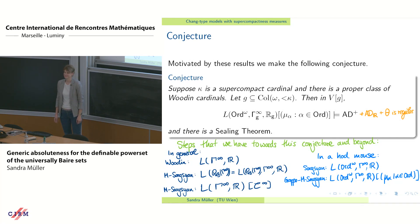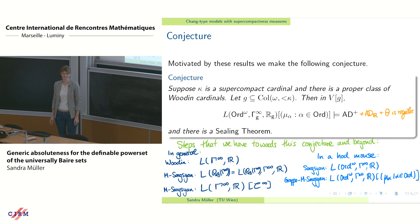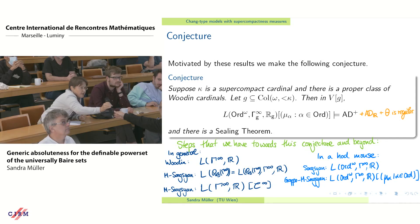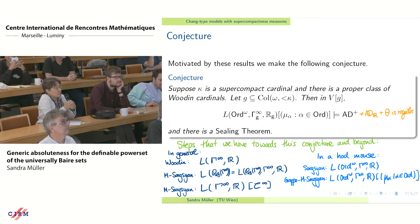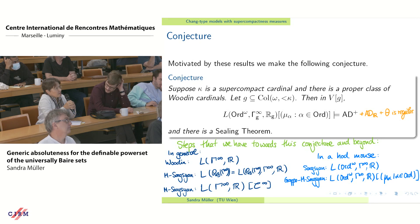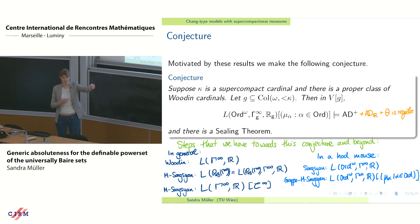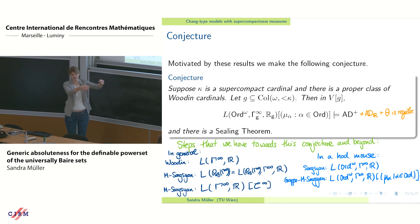Question: About seven slides ago you had HOM* and ℝ* in M[G] — what are they? Answer: For the derived model construction you look at the Lévy collapse of some limit of Woodin cardinals. ℝ* are the reals that appear in segments of the collapse, and HOM* are the things that are homogeneously Suslin in some segment of the collapse up to the end.